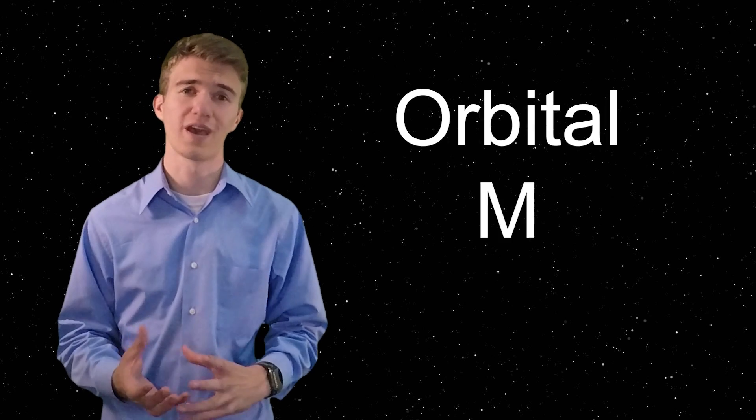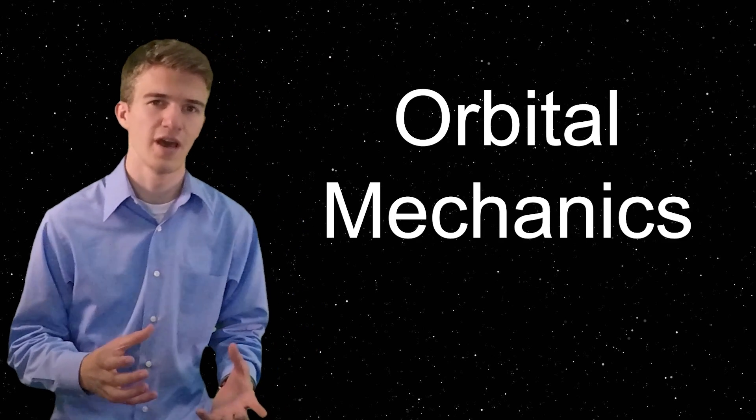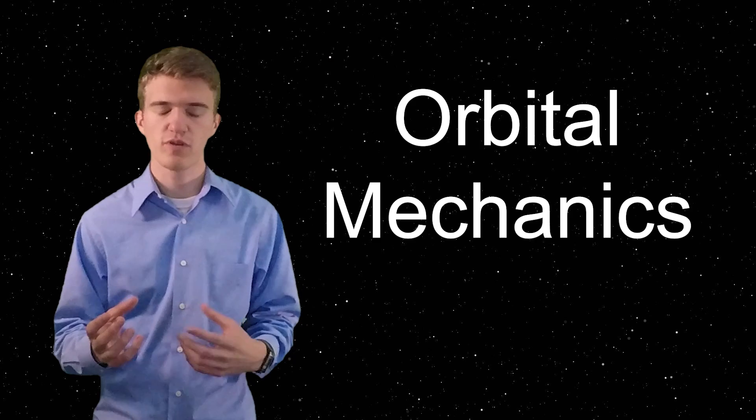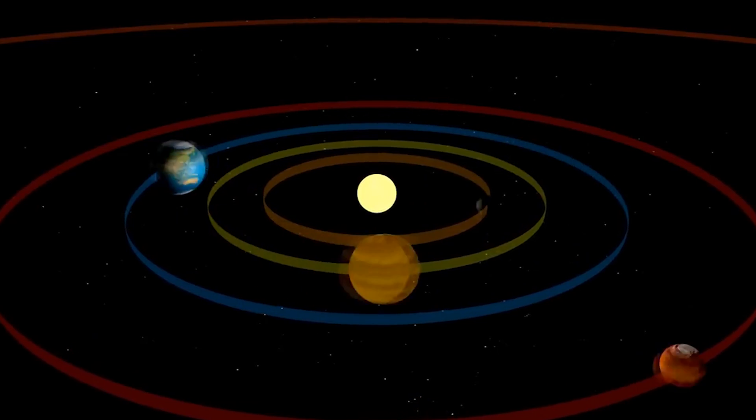So before we get started about understanding how something goes from Earth to Mars, we have to understand the basics of orbital mechanics or what an orbit is. An orbit is a spacecraft or satellite that is traveling around a larger body, whether it be a moon, a planet like Earth or Mars, the sun. All of these things are massive enough that their gravity can keep things in an orbit.